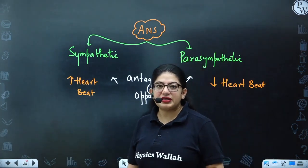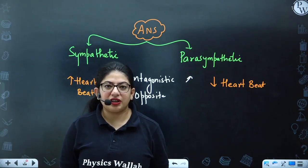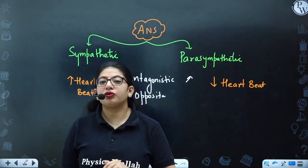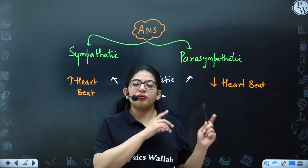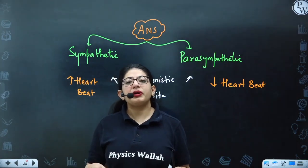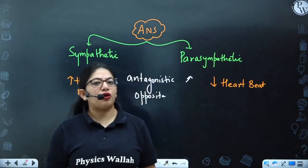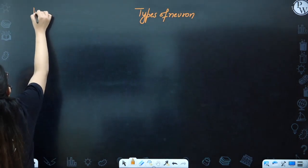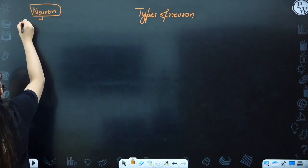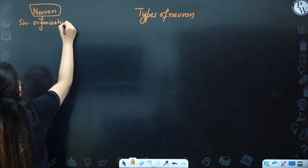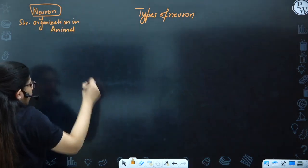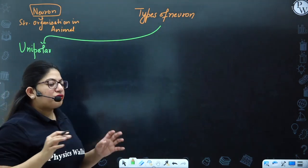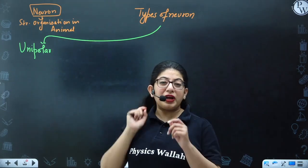Before starting this chapter, I want to give you one piece of advice. If you have attended my lecture on Structural Organization in Animals, that's great. If not, go to that particular lecture where I have taught the structure of neuron in detail. Here we will not be covering that again. Let's talk about types of neurons. Neurons are of various types. The first category is Unipolar. This classification is based upon the structure of the neuron.